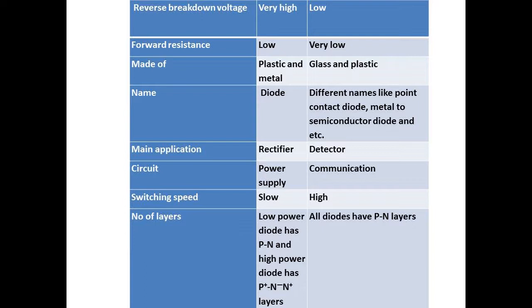Reverse breakdown voltage - junction diode very high, signal diode very low. Forward resistance - junction diode low, signal diode very low. Made of - junction diode plastic and metal, signal diode glass and plastic. Name - junction diode is called diode, signal diode has different names like point contact diode, metal to semiconductor diode, etc.